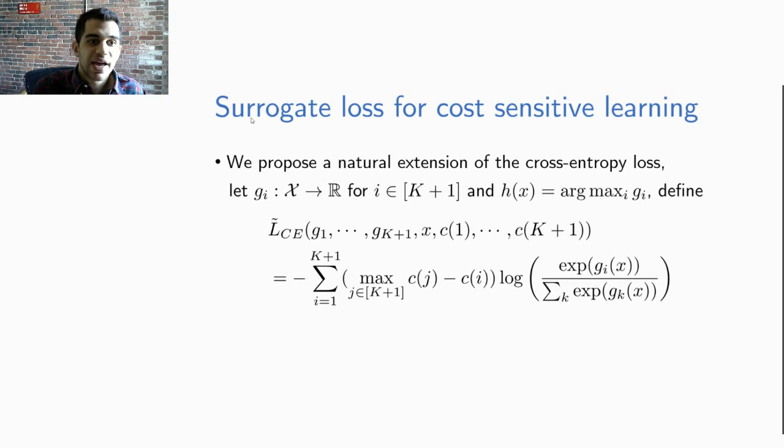Our surrogate loss that we introduce is called tilde L_CE and it is the sum of the negative log softmax of each g_i weighted by the difference between the maximal cost among all K plus one classes and the cost for a particular class C_i. The introduction of the maximum is to make sure that all terms in this loss are positive and we minimize something that is convex.